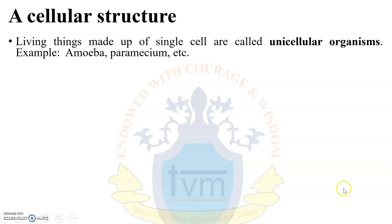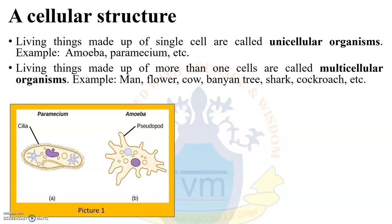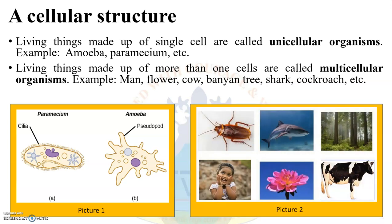Living things made up of a single cell are called unicellular organisms — for example, amoeba, paramecium, etc. The picture shows amoeba and paramecium as they look under a microscope. Living things made up of more than one cell are called multicellular organisms — for example, man, flower, cow, banyan tree, shark, cockroach, etc.